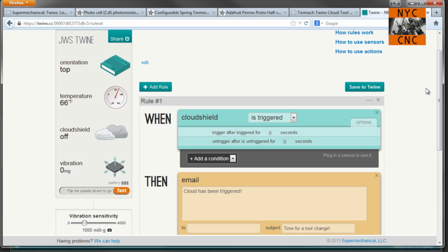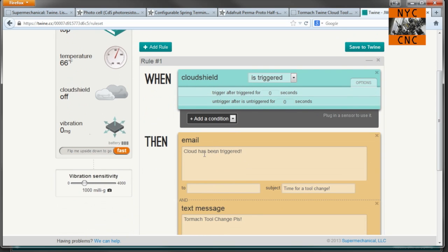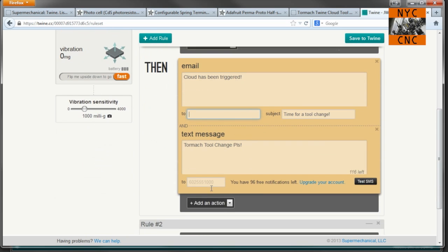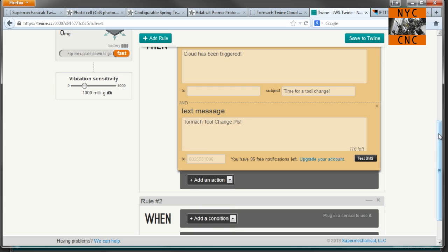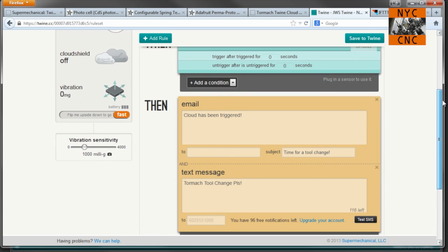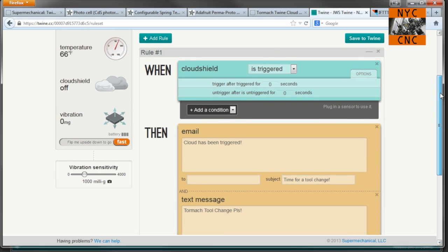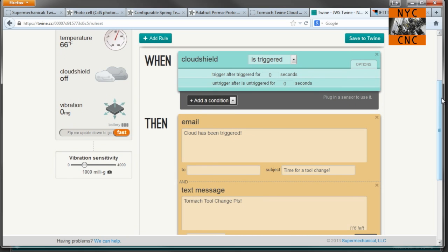Once you've got your Twine setup out of the box and you plug in a cloud shield, you can log in and click Add Rule. You would simply say, when cloud shield is triggered, I want to receive an email. You would type in your email address here and your phone number for text message here. My application here was the CNC mill. Lots more you could do with this. I think one of the examples that the folks at Twine talk about is if you want to know when your laundry machine is done. Super easy to do that.